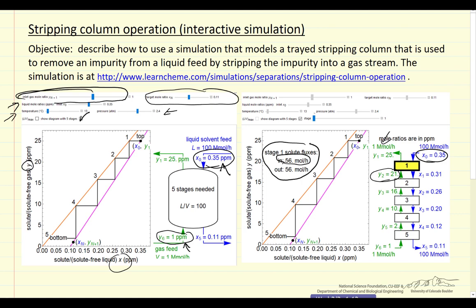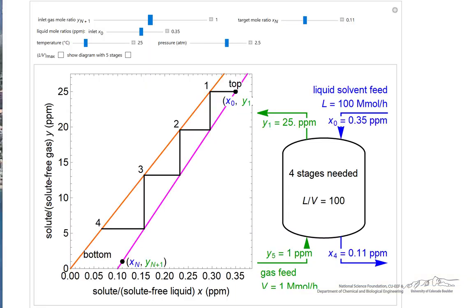The other option is to show the minimum L over V ratio. Any lower, it would take an infinite number of stages for the separation. Let's look at the interactive simulation and see how these sliders affect the system.